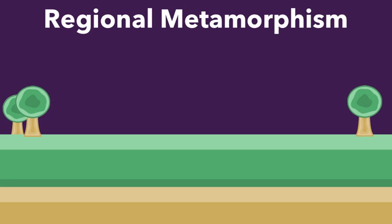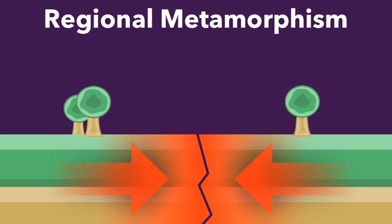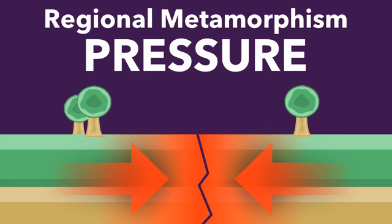Now let's talk about the second type: regional metamorphism. This one is going to be more from pressure. Imagine a plate boundary — a fault, a crack — where two plates are coming together at a convergent plate boundary. In the middle, there's going to be immense pressure, and that pressure can cause the rocks trapped in the middle to become metamorphosized. All along this boundary you'll find metamorphic rocks. This is different from contact metamorphism in that it's not so much about the heat — it's more about the pressure.